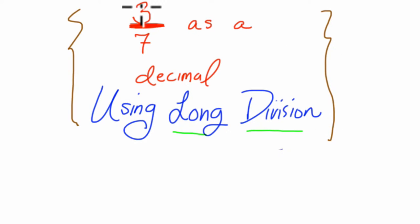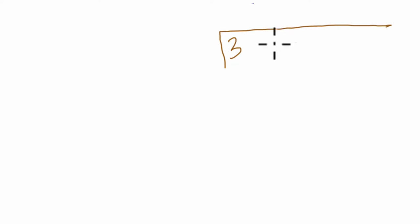That just means we're going to divide 3, the numerator, by 7. And this actually does take a little while, so we're going to set a nice long bar here.